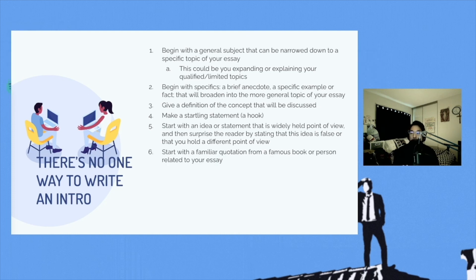Number six, start with a familiar quotation from a famous book or person related to your essay. Again, that's another form of a hook as well. You can give a number of descriptive images that will lead to the thesis of your essay. You can ask questions that you intend to answer,